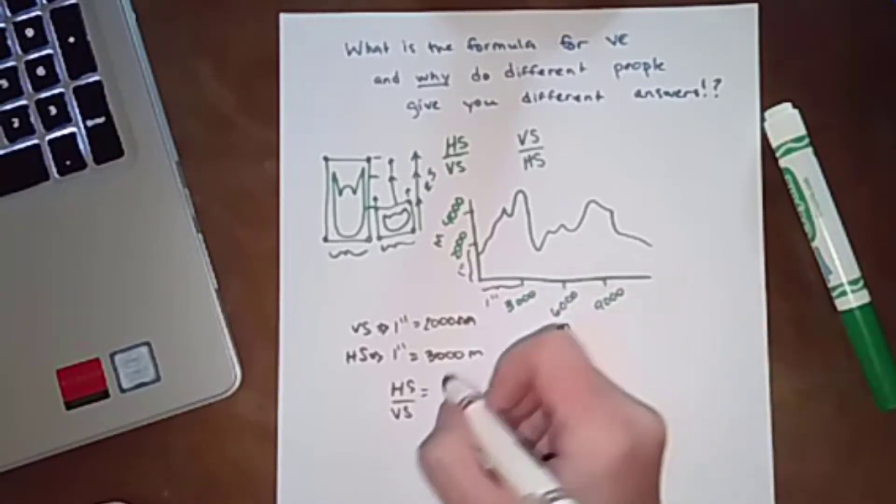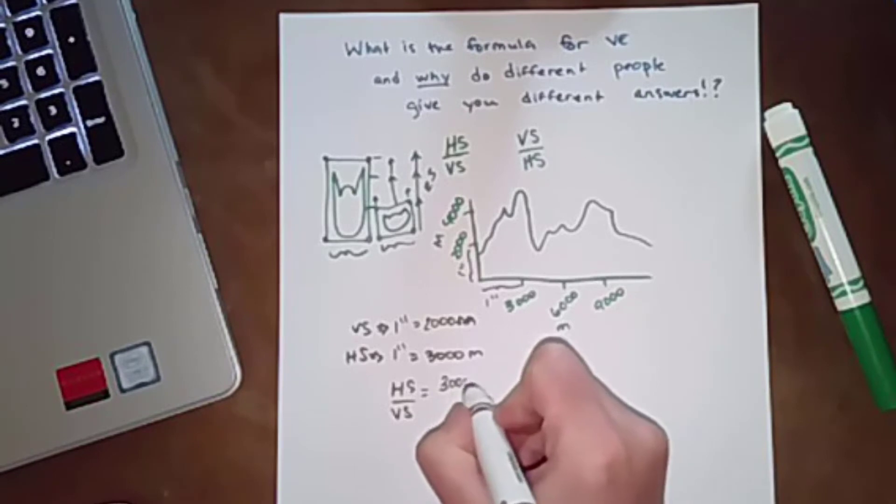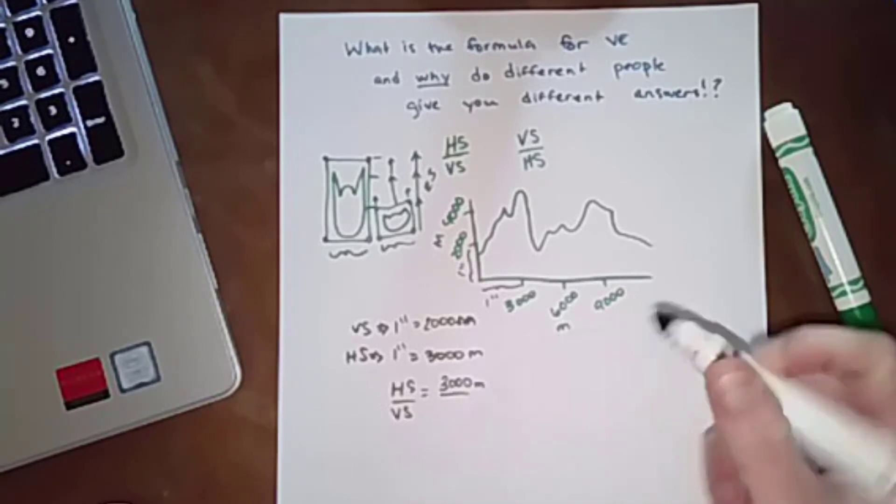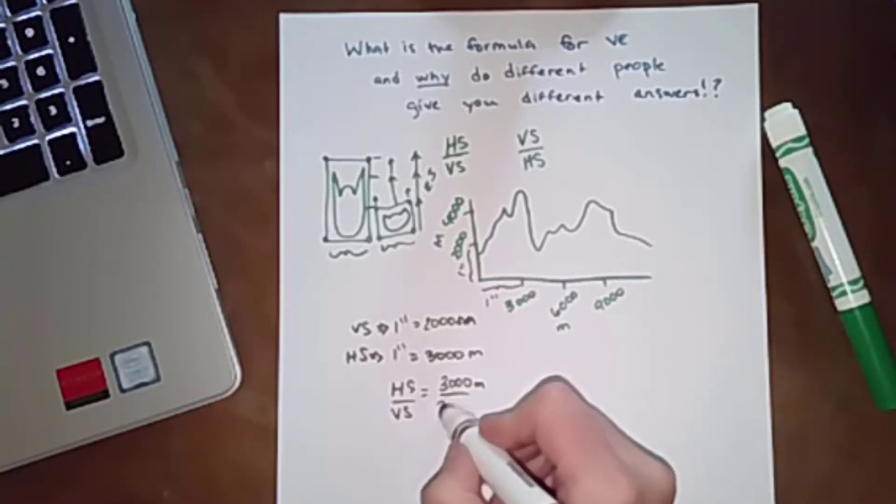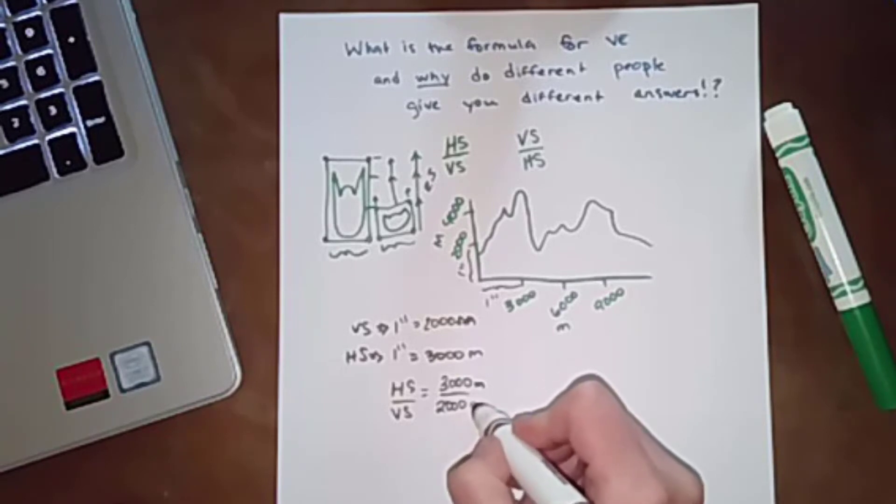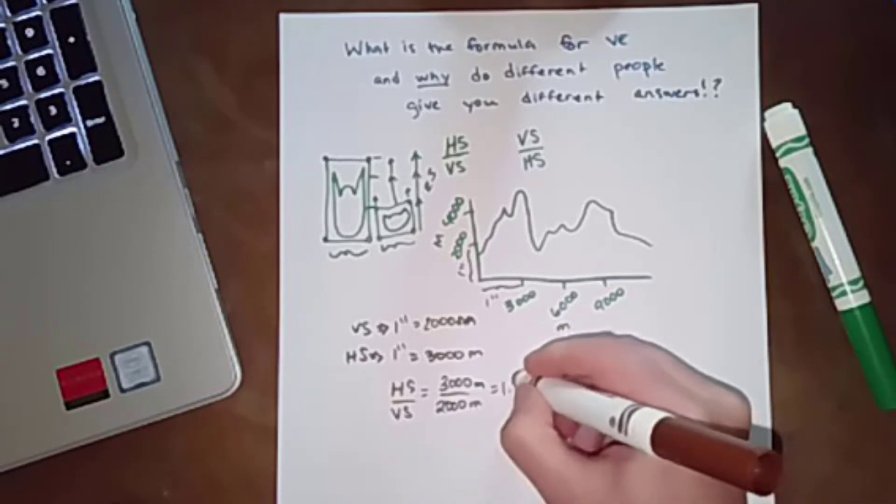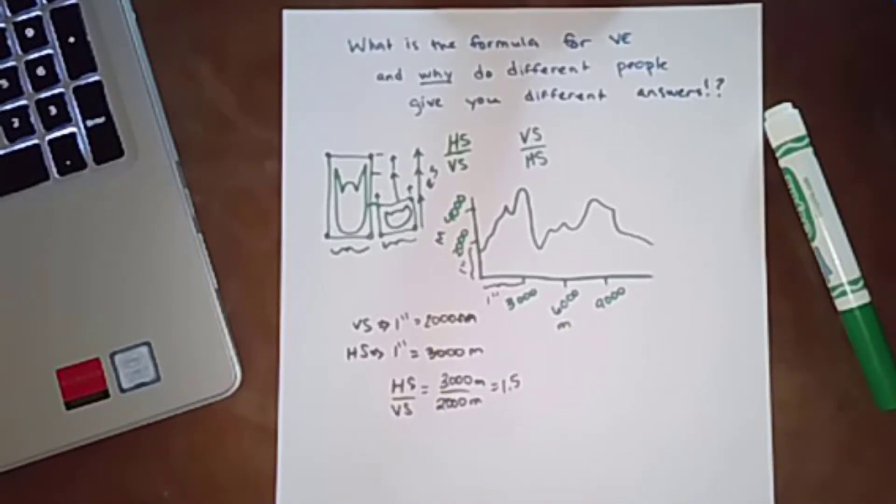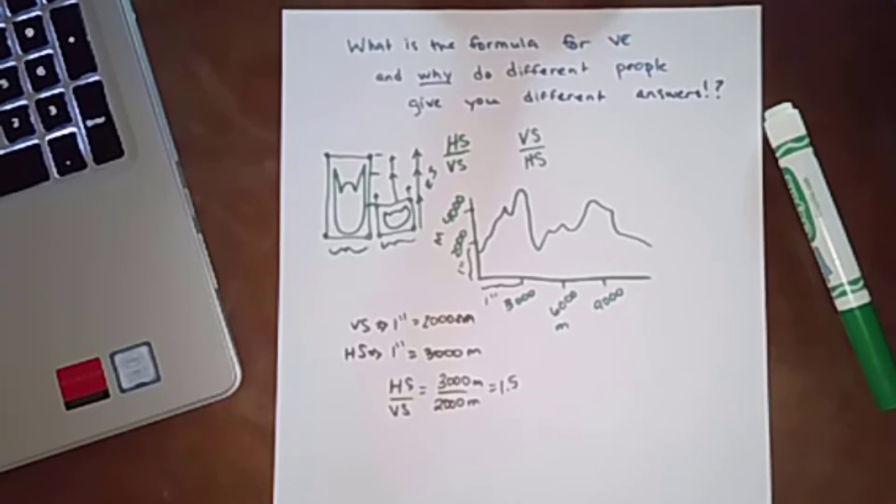horizontal scale being 3,000 meters by vertical scale being 2,000 meters, so you get 1.5. If your topography looks exaggerated, your vertical exaggeration is going to be greater than 1 usually.